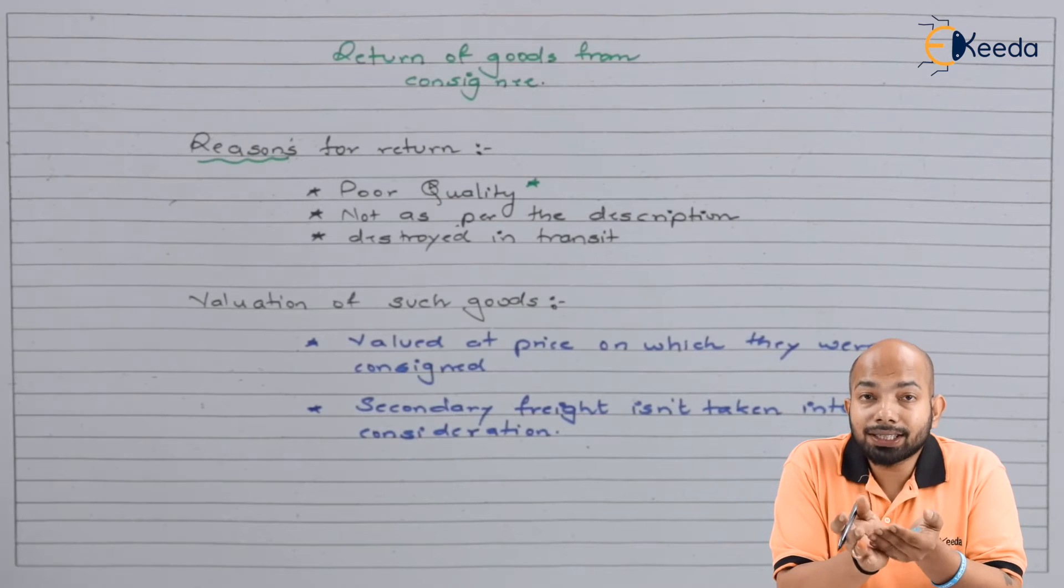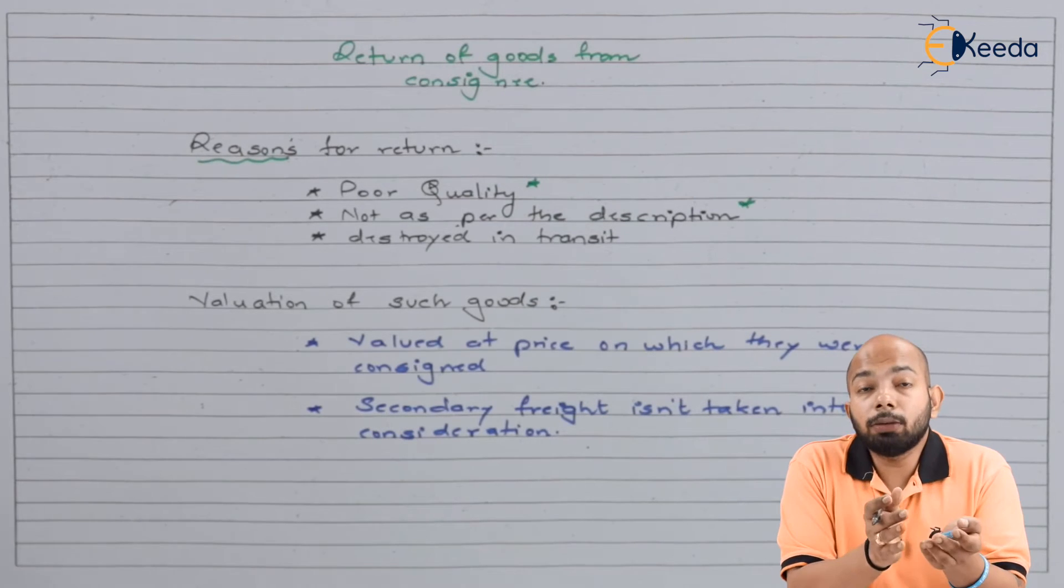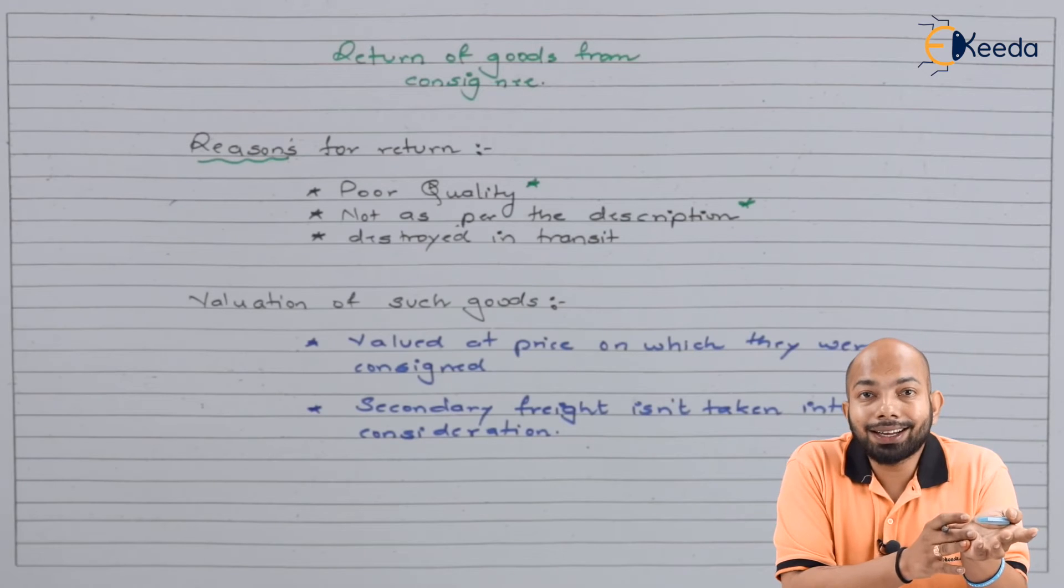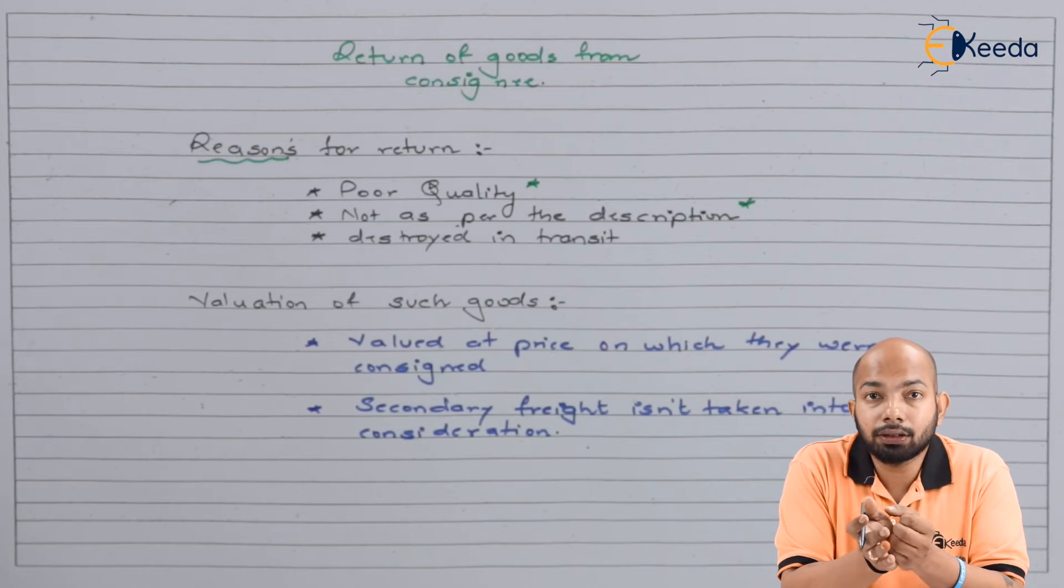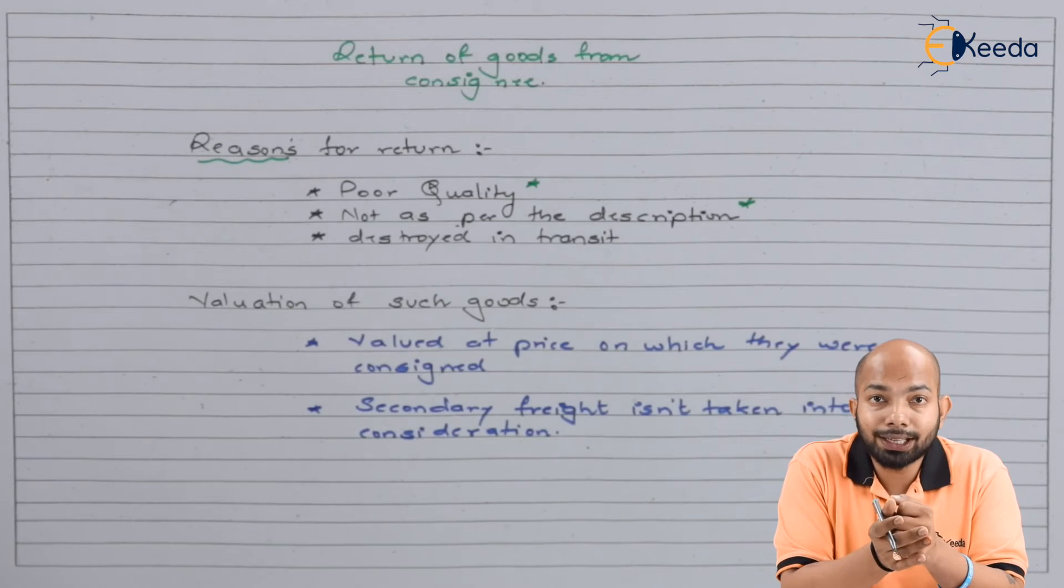Second reason may be not as per the description, or third, destroyed in transit. These are a few of the several reasons we discussed earlier that can be part of consignment.